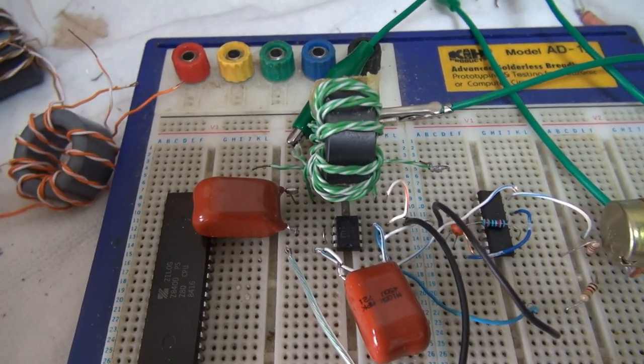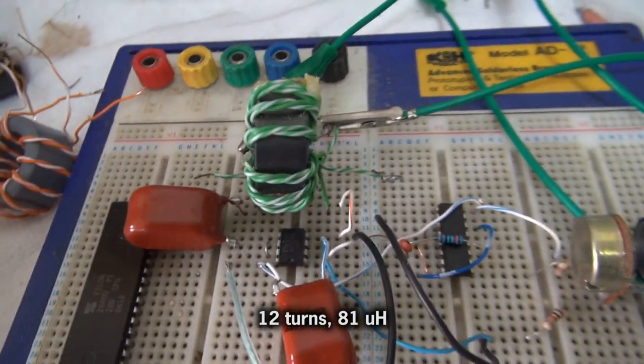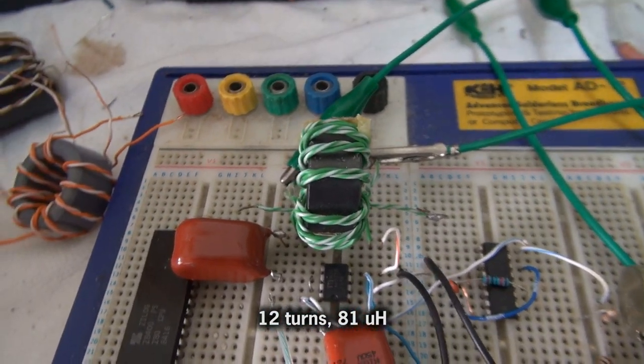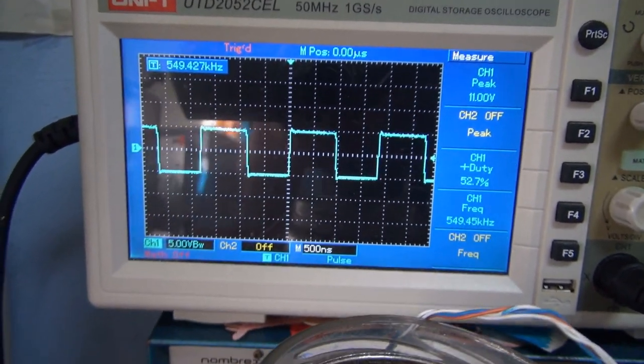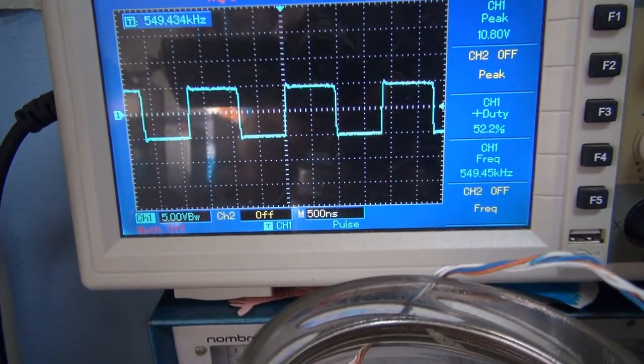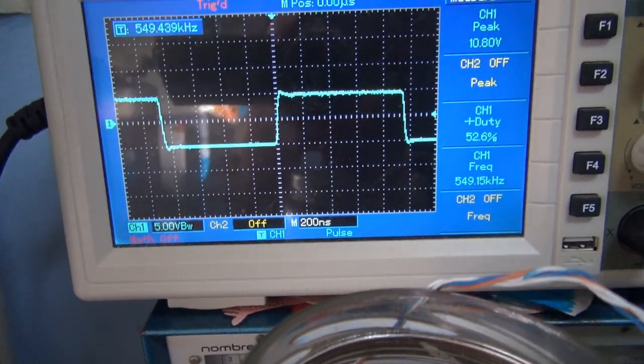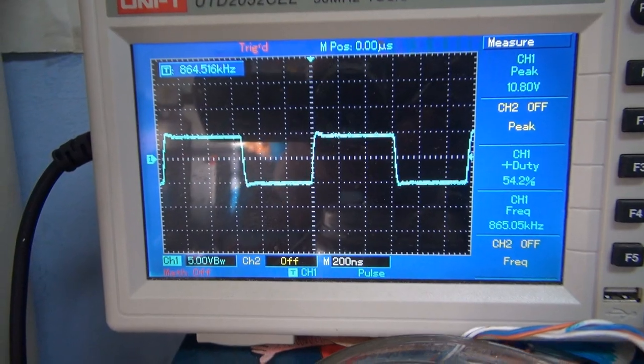And just for the heck of it, that old gate drive transformer that I made, this is 12 turns, and has an inductance of about 81 microhenry. Let's see what kind of waveform we get. So this is at 500, almost 550 kilohertz. Let's go up to our 800 and whatever. 864 kilohertz.